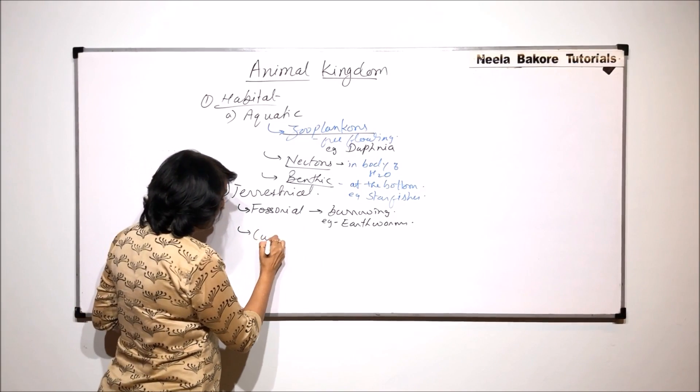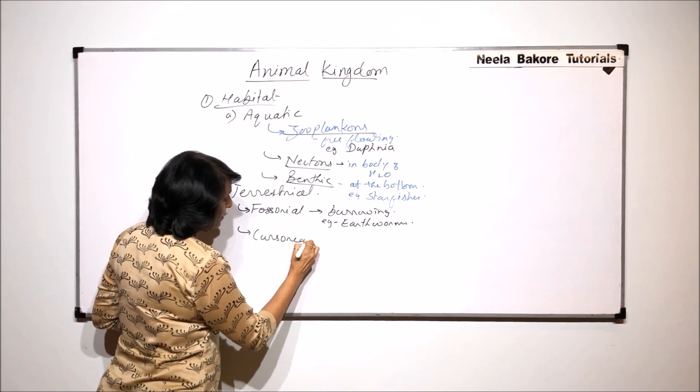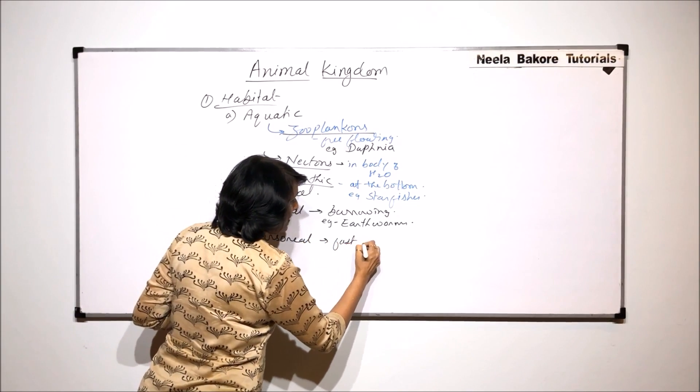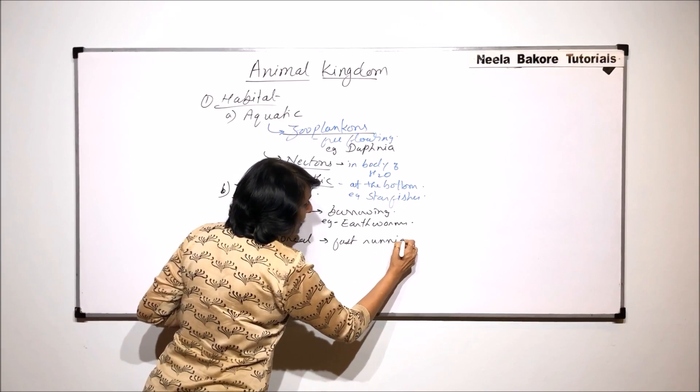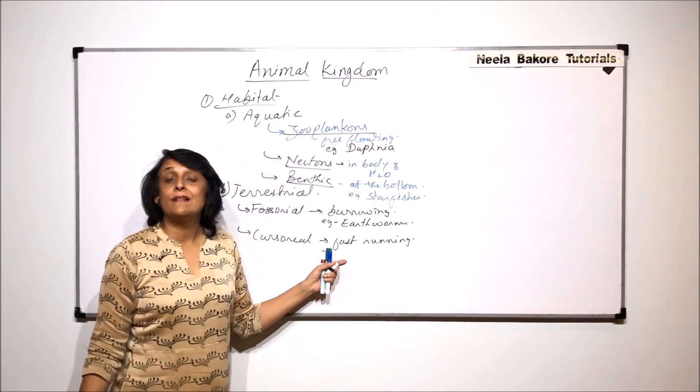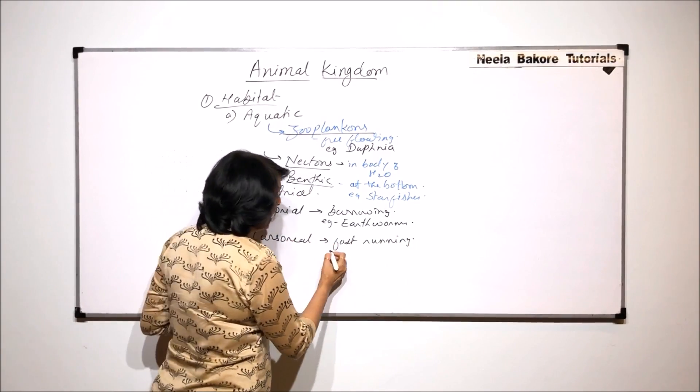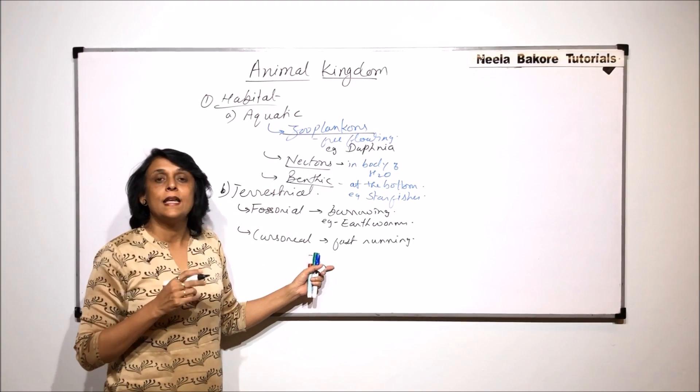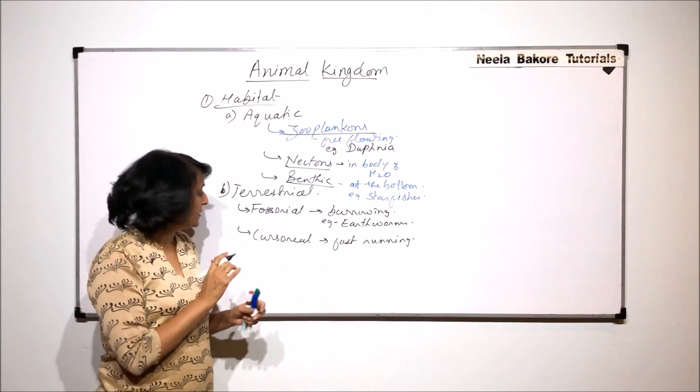Then there are cursorial animals. Cursorial animals are fast running animals. They run very fast on the ground. Example would be horse-like animals, animals which are normally running very fast, like deers, horses. They would come under this category.